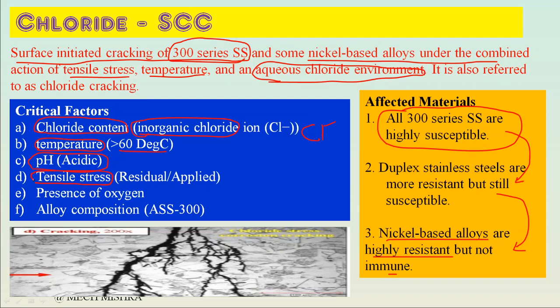Tensile stresses are also an important factor - these may be residual (present from welding, rolling, or fabrication) or applied. Compressive stresses can resist CLSCC, so if compressive stresses are present there will be less chance of CLSCC occurring. The presence of oxygen is also a critical factor - if oxygen is higher in the system, the chances of CLSCC are much higher because oxygen changes the electrode potential, and there is a large effect of electrode potential on corrosion.